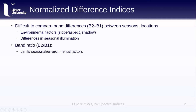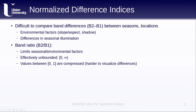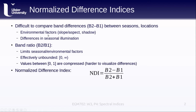Looking at band ratios helps to limit seasonal and environmental factors, but it is effectively unbounded — values range from 0 to potentially infinity. In addition, values between 0 and 1 are compressed, which makes it harder to visualize differences for areas where band 1 is greater than band 2.